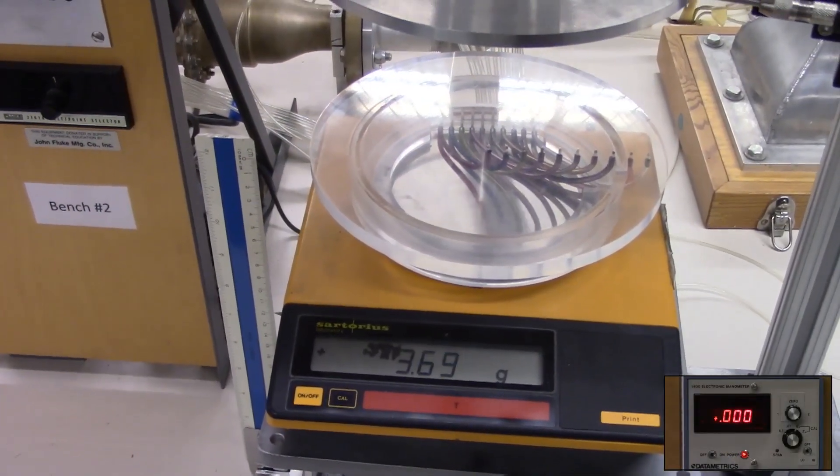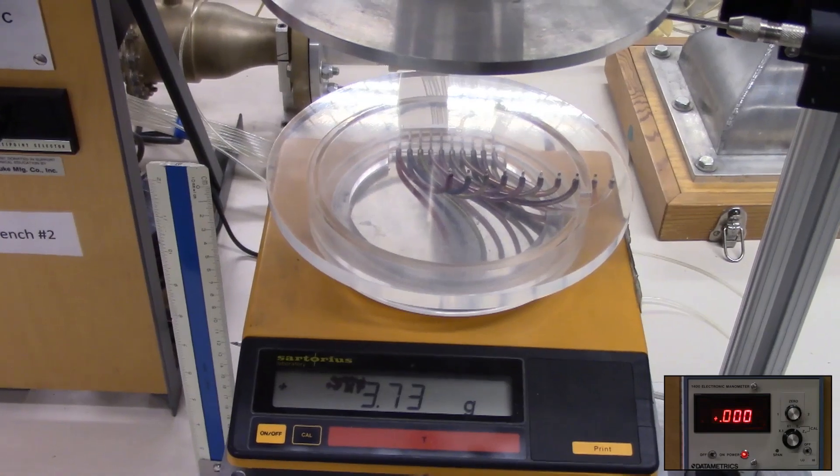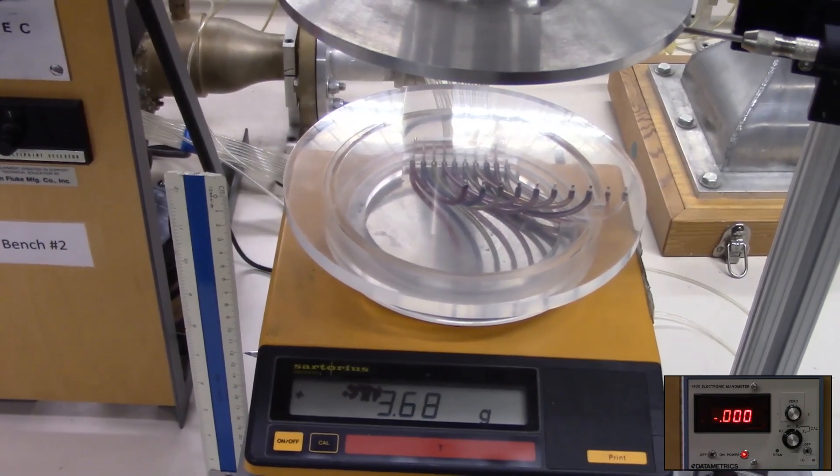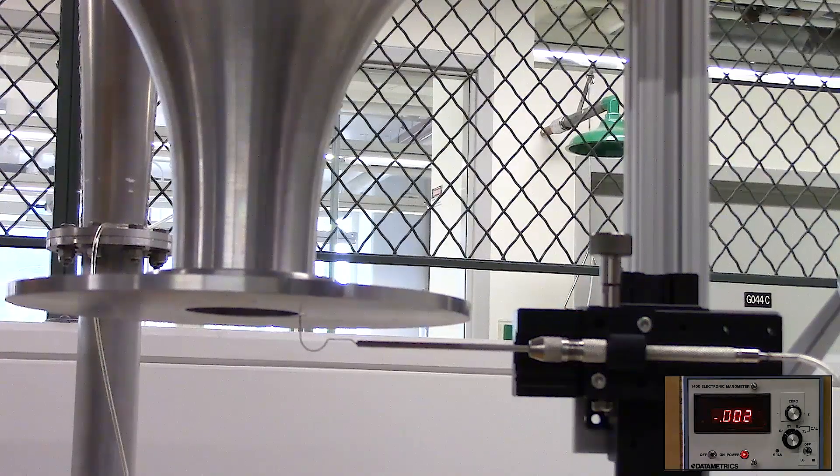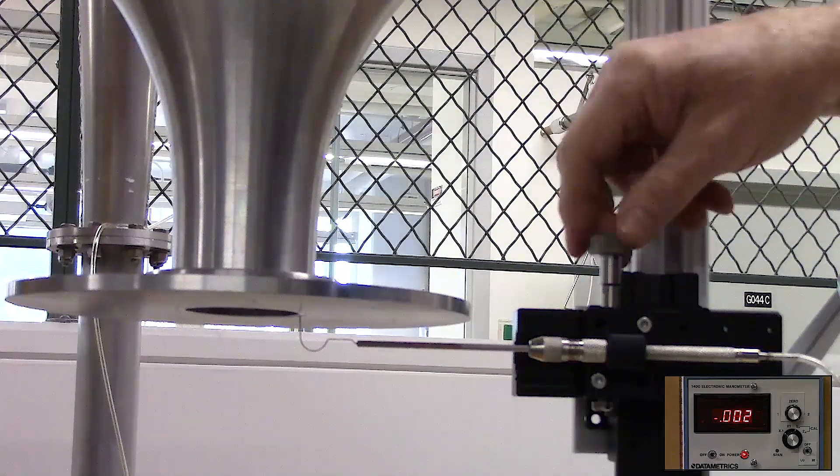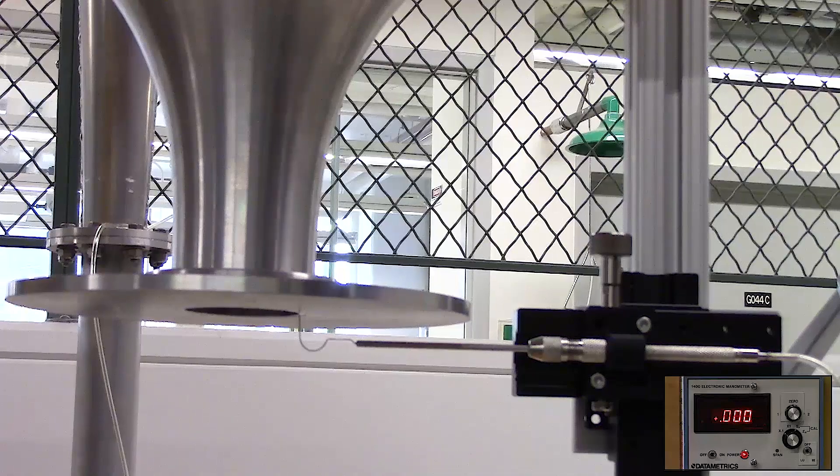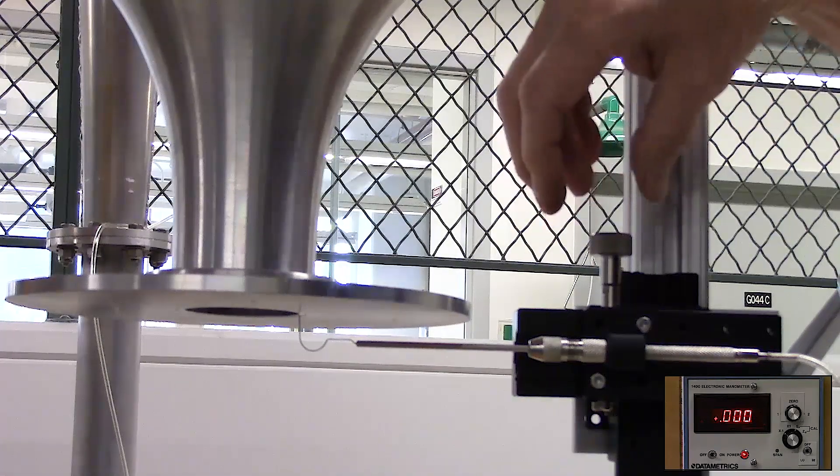So you can see that with our flow set at 30 millimeters of water, the downward force exerted on the balance by the jet is about 3.7 grams. You can see our manometer reading at the bottom of the screen is bouncing around a little bit. That's to be expected since we're right at the edge of the wall.